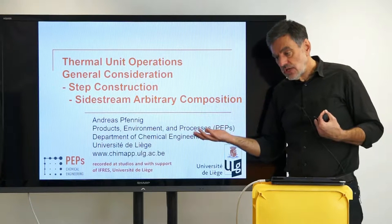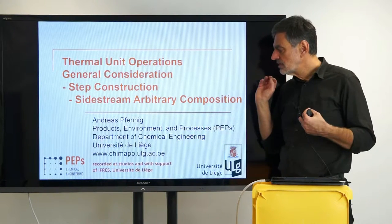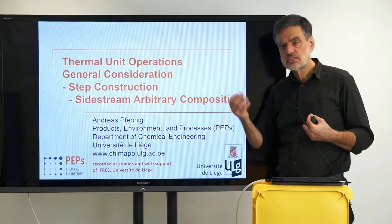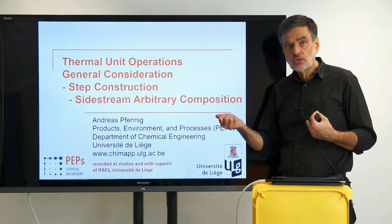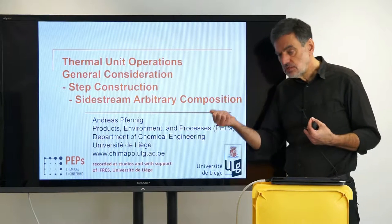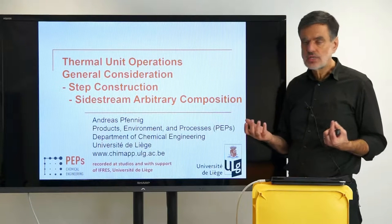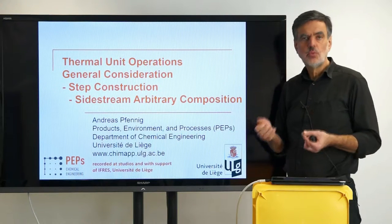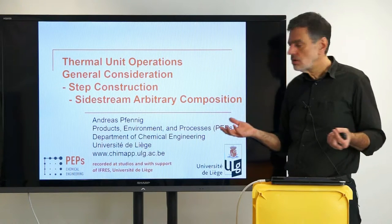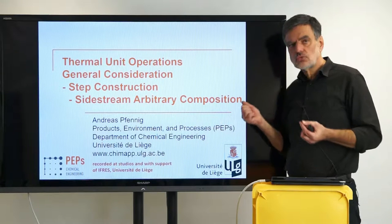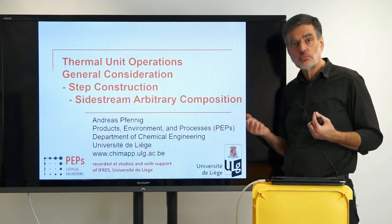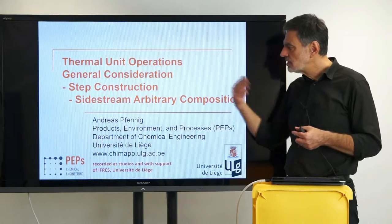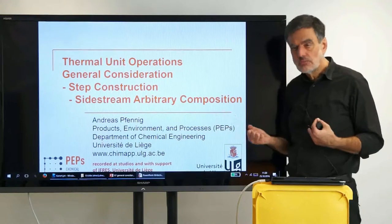We also learned something else we can generalize from the last video: we do not only have to regard side streams as positive, as being a feed. It can also be a removal, meaning that if we set it up in the balances as a feed stream, the numerical value just has to be taken as negative. A negative feed to the column is just a removal. Two typical exceptional cases: you may withdraw something through a membrane process — what you remove has a different composition from what you find in the process at that point. The second case is a vapor-liquid process where the liquid splits into two phases and you remove just one of those two liquid phases, which has a different composition from the overall L-dot phase.